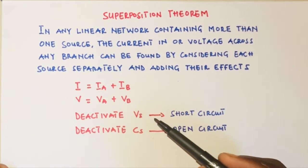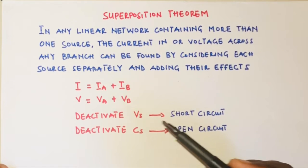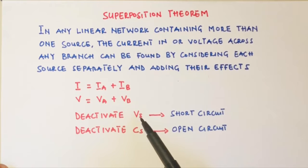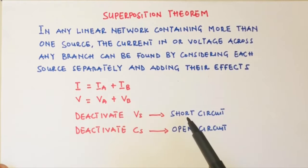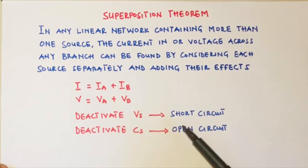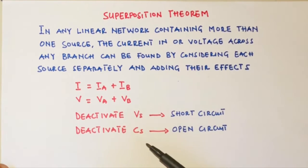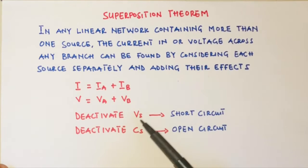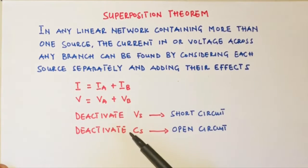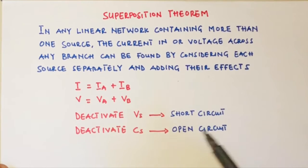One thing we need to take note of is the deactivation rule. Whenever you deactivate a voltage source, you introduce a short circuit — you short circuit the voltage source. And then you open circuit a current source. So whenever you have a voltage source it becomes a short circuit, and whenever you have a current source it becomes an open circuit.